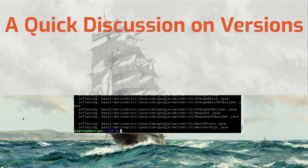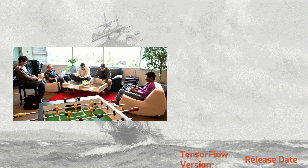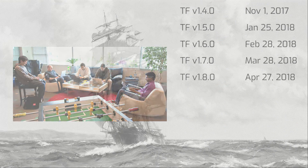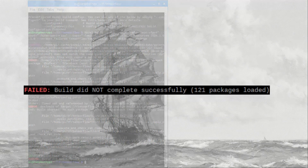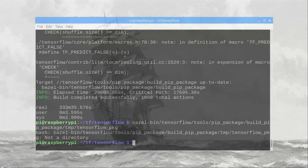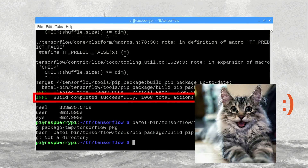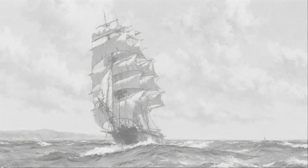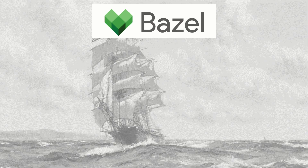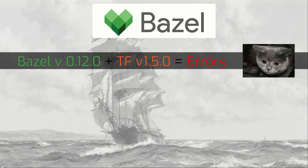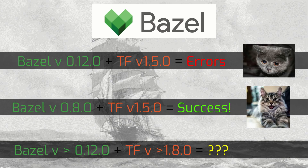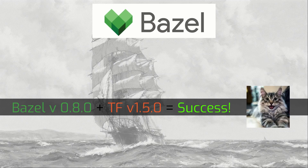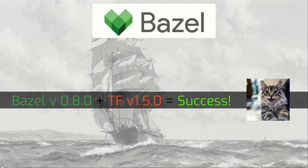Before we continue, it's time for a quick discussion on versions. Google's hardworking employees are constantly releasing new versions of Bazel and TensorFlow. Unfortunately, sometimes the newest versions don't work on the Raspberry Pi. I got errors while trying to build TensorFlow versions 1.8 and 1.7 on the Pi. Fortunately, TensorFlow version 1.5 builds just fine. Hopefully newer versions will be more compatible with the Pi. We're using Bazel 0.8.0 to build TensorFlow — the newest version of Bazel is 0.12.0, but we have to use 0.8.0 to build TensorFlow 1.5. As long as you stick to these instructions and use Bazel 0.8 to build TensorFlow 1.5, you should be able to get everything to work.